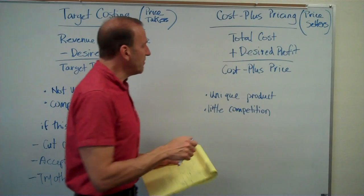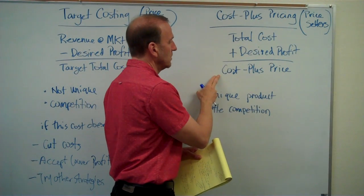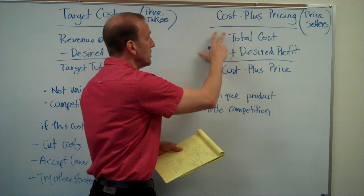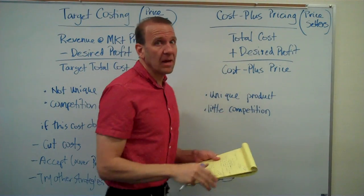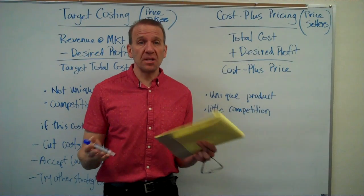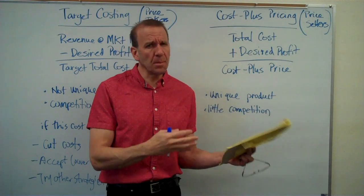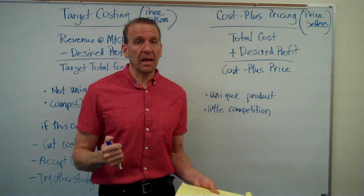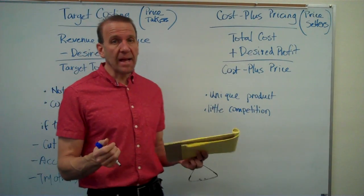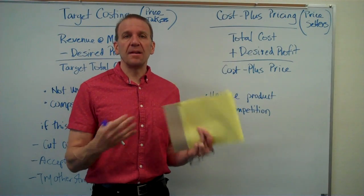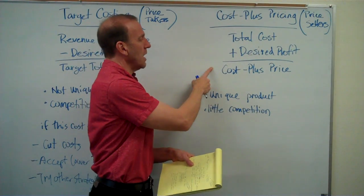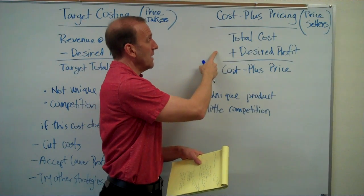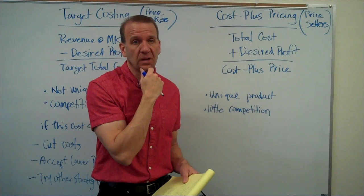Now if this price is too much, then we might be able to adjust these slightly or somehow differentiate our product. Because maybe there is some competition out there. Maybe someone sells something similar to ours, and the market isn't really seeing the differentiation. If that's the case, we need to somehow sell that differentiation so that we can get this cost plus price. And if that's not going to work, then we might need to decrease our profit slightly or somehow adjust our cost.